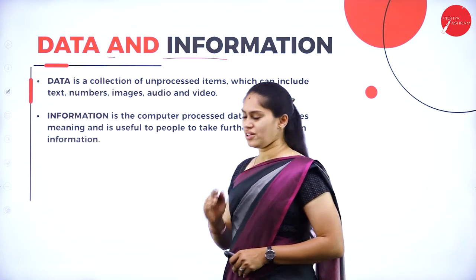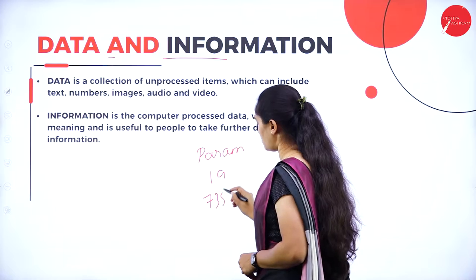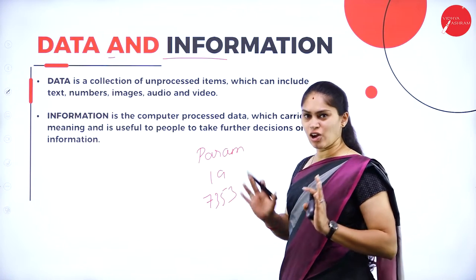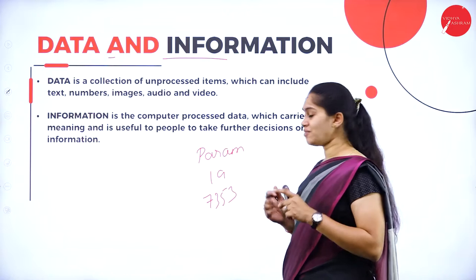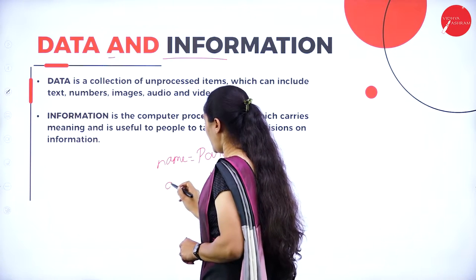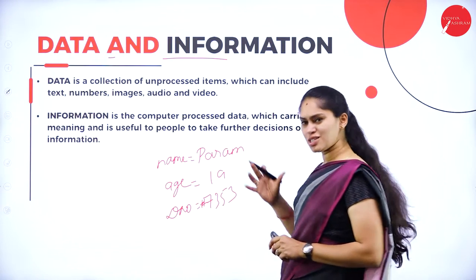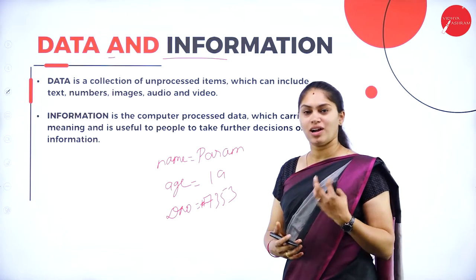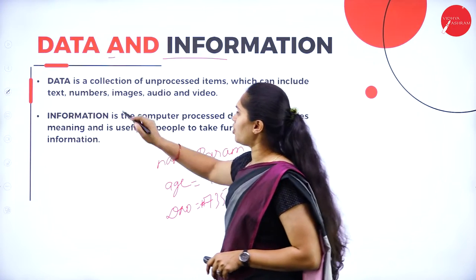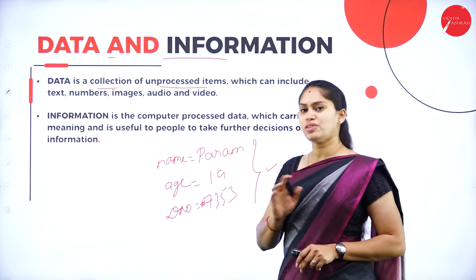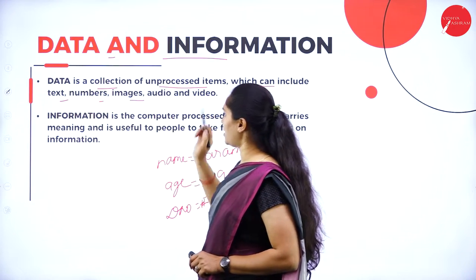Both data and information are different. For example, if I write 'Param, 19, 7353' — you can't make much out of it. But if I write 'Name = Param, Age = 19, Door Number = 7353,' that is more informative. Data is a collection of unprocessed items that needs to be processed. It can include text, numbers, images, audio, and video.